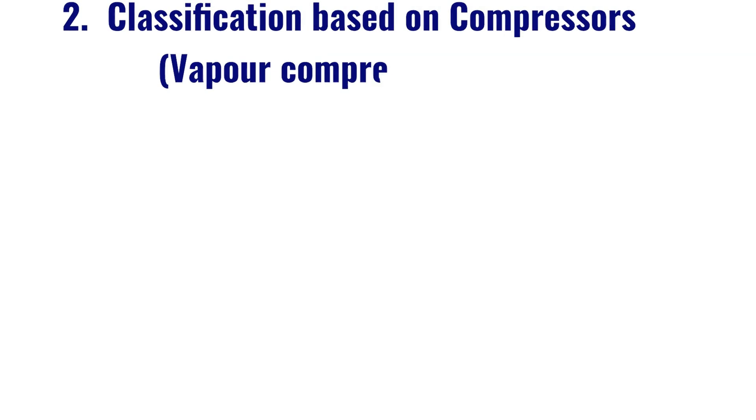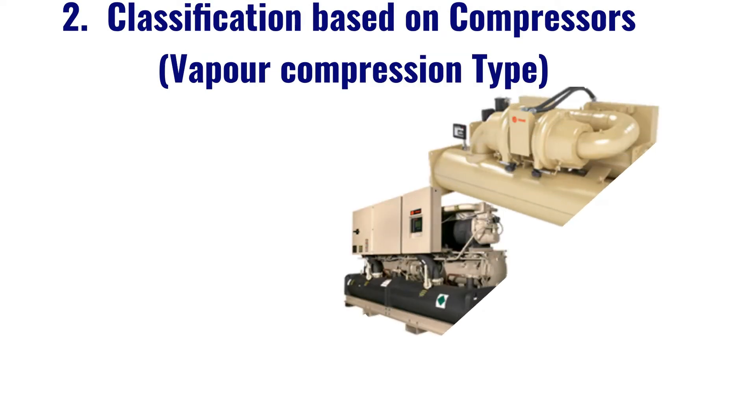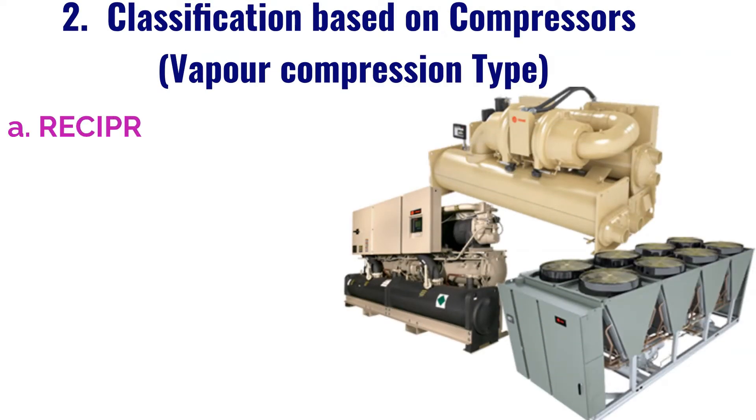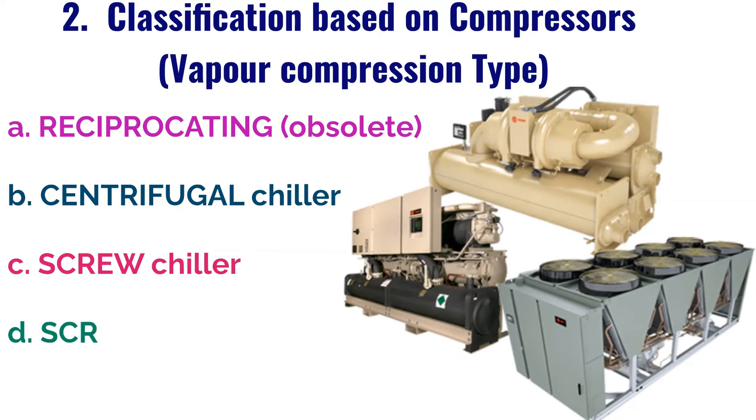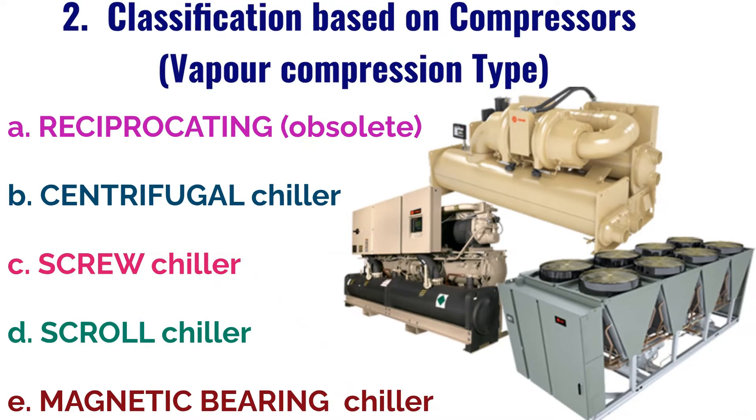Second classification based on compressors: A. reciprocating chillers, almost obsolete; B. centrifugal chillers; C. screw chillers; D. scroll chillers; E. magnetic bearing chillers. Modular chillers are scroll, screw, and magnetic bearing chillers.